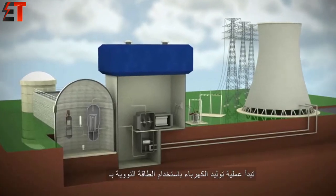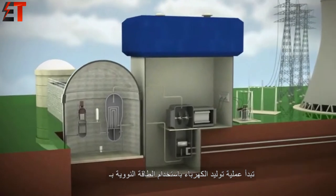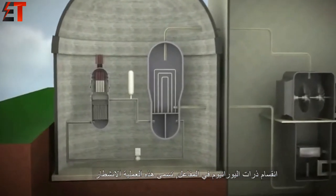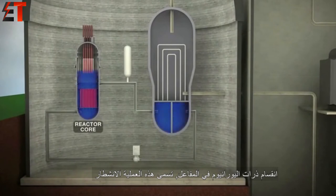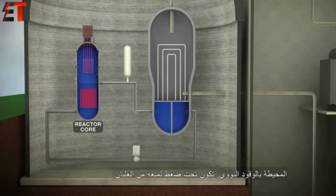The process of creating electricity using nuclear power begins with the splitting of uranium atoms in the reactor. This process, called fission, produces heat. In a pressurized water reactor, the heat from the water surrounding the nuclear fuel is kept under pressure to prevent it from boiling.